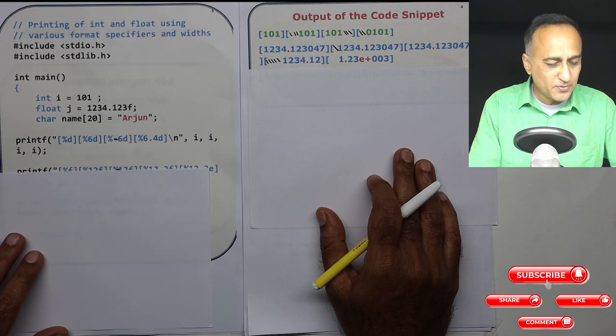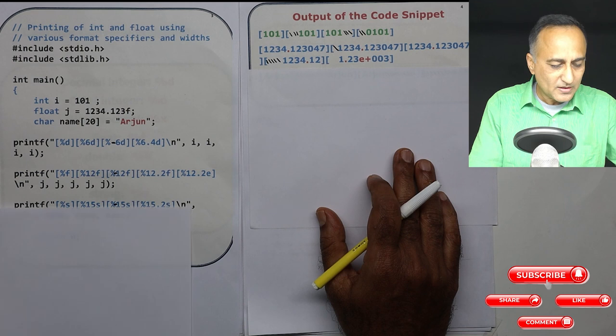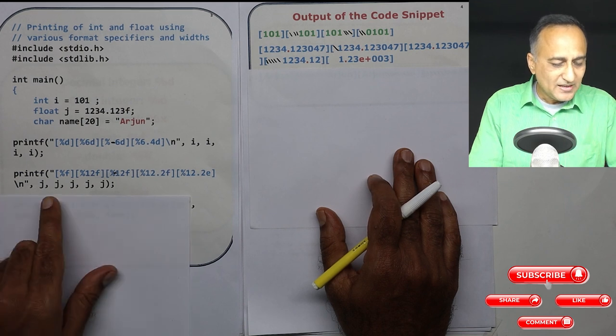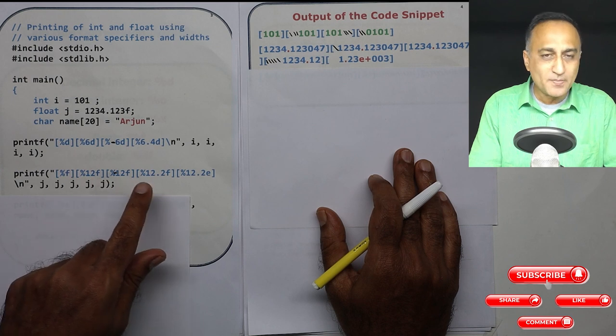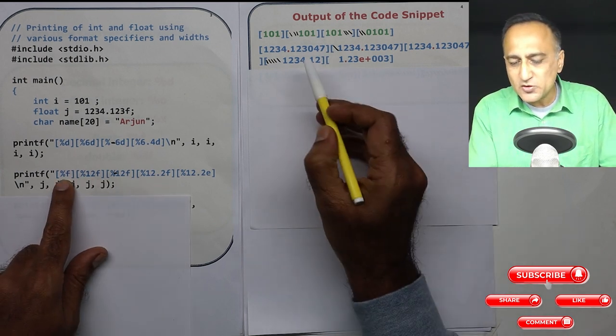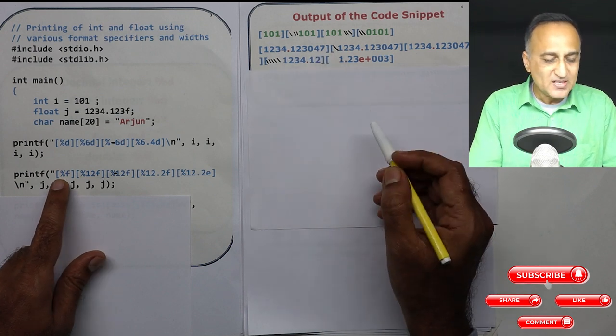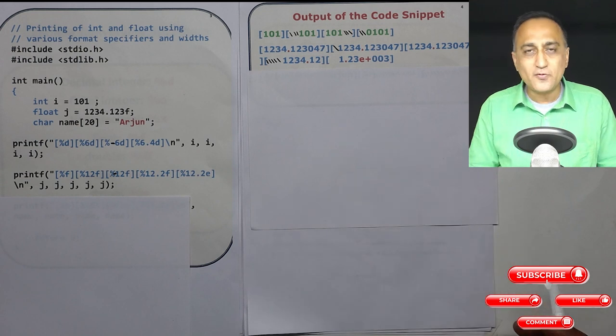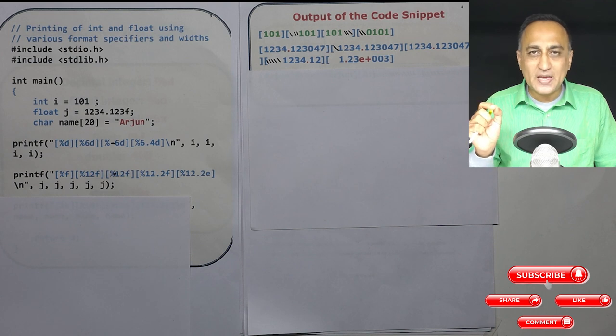Now let's take a look at the next printf statement. In the next printf statement what I am doing here is I am printing a real number j three times with different formats of the conversion specifier. In the simple %f it's going to print 1234.123047. Just in case you're wondering where the 047 came, real numbers or if you know floating point numbers are not exactly stored, they are an approximation.